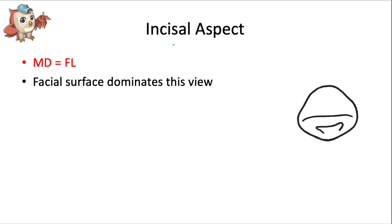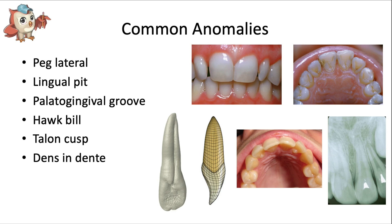The crown measurements from the incisal aspect are nearly identical for the mesiodistal and faciolingual dimensions, so we'll call them equal. The facial surface dominates this view, thanks to how convex the crown of the tooth is.